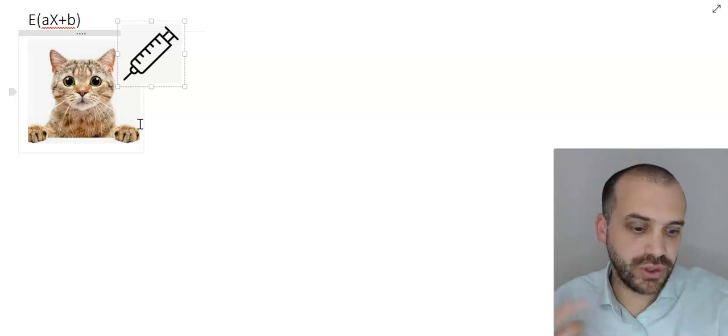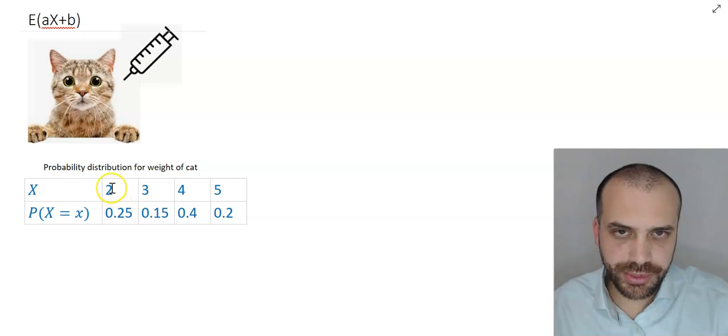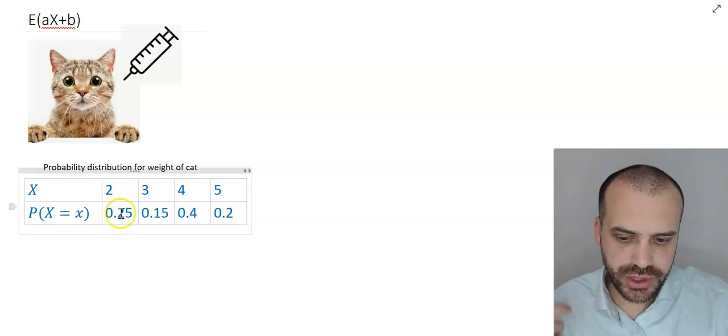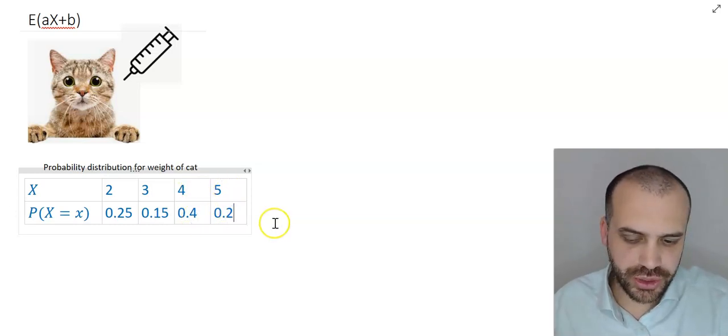Now we can create a probability distribution for the weight of this cat. As you can see from this probability distribution, the probability that a cat weighs 2 kilograms is 25%, 3 kilograms 0.15, 4 0.4, and 5 kilograms 0.2.